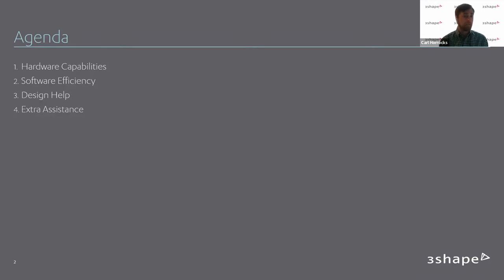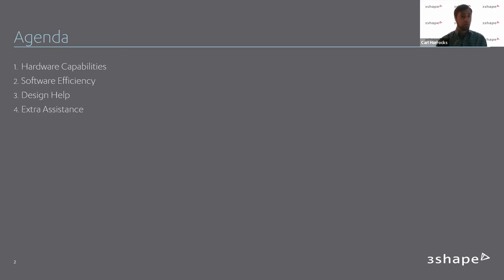Another category of efficiency is design help — in case you need to outsource designs to a third party, there are plenty of design services out there. And then some extra assistance: we'll talk about the training YouTube channel 3Shape offers, Facebook groups that help, and how being part of these communities can make your lab more efficient — whether it's hearing directly from 3Shape via YouTube or peer-to-peer on our Facebook page.